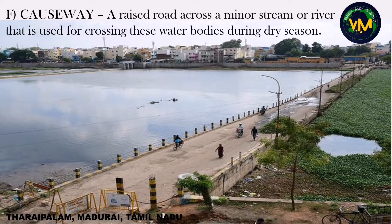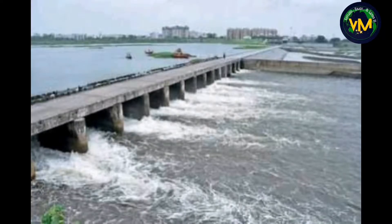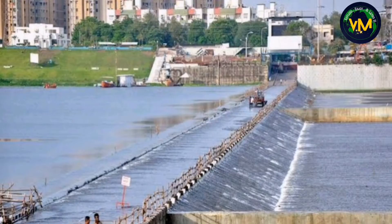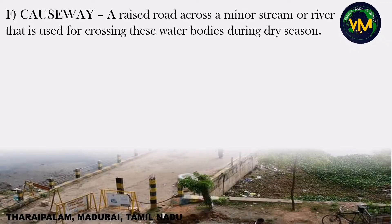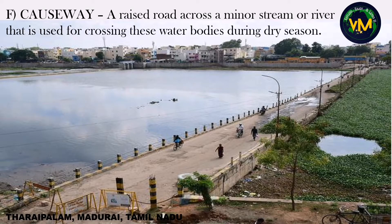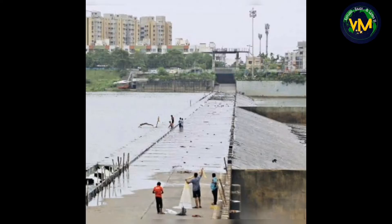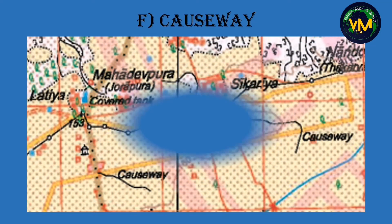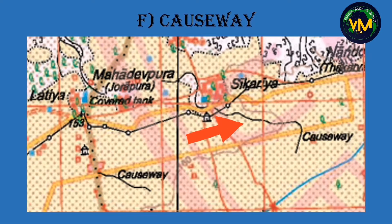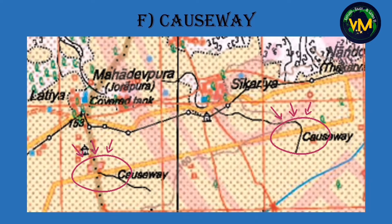Causeway: at first sight it looks like a bridge, but it is not. It is a raised road usually built across a minor stream or river. The main difference between a bridge and a causeway is that causeways can be crossed only during the dry season, because during the rainy season they will mostly be submerged under water. This picture is from Madurai — it is called Tharai Palam because it is just close to the ground; during floods this road will be completely submerged. In the topographical map, the black line is a seasonal stream and the yellow line is a district road; wherever the stream cuts the road and it is written as causeway, there is a low road to cross the seasonal stream.